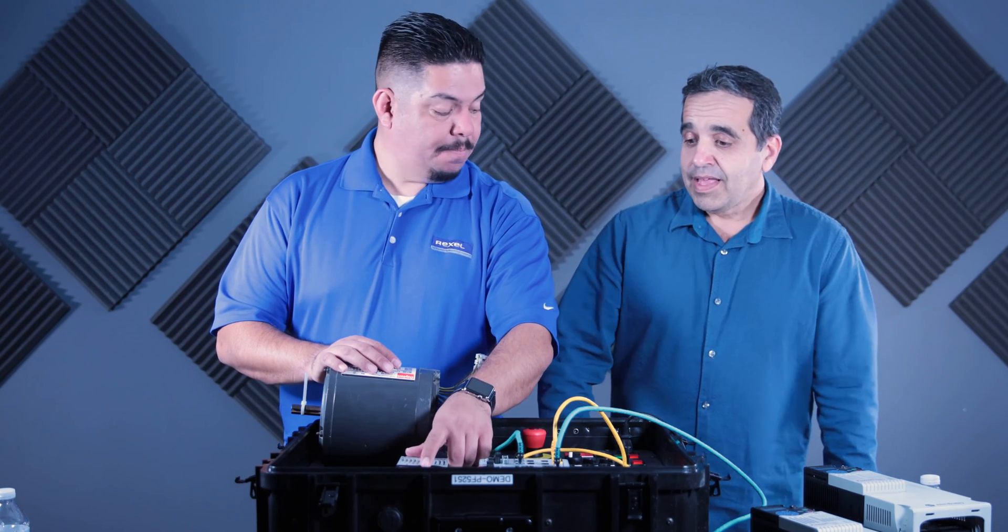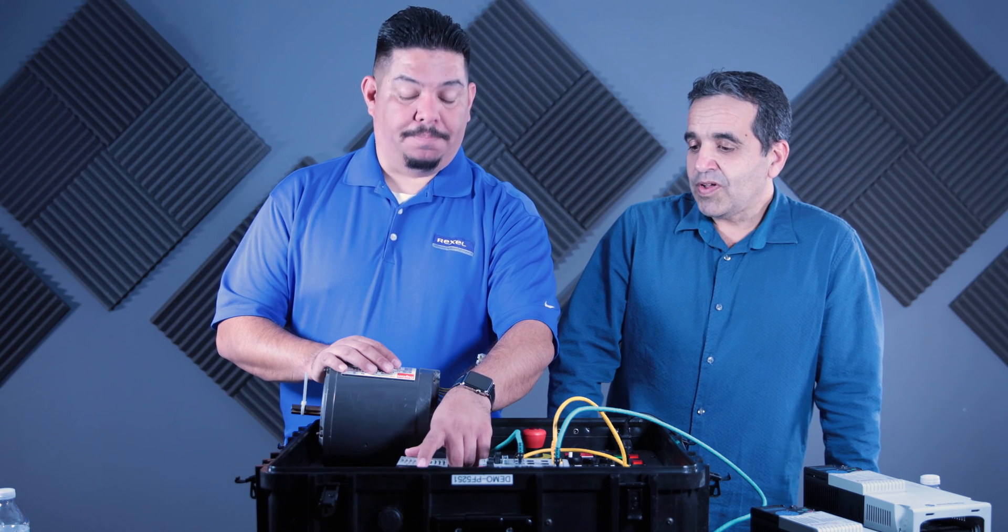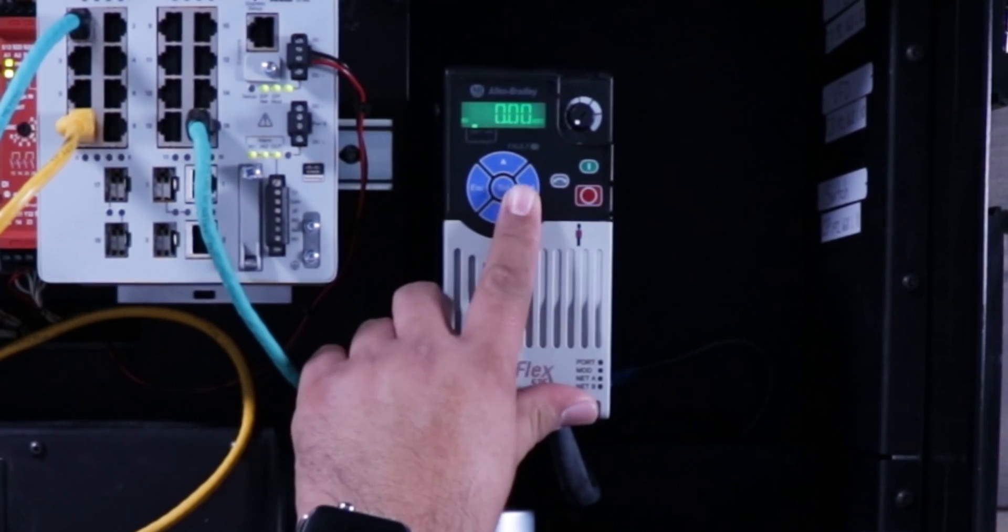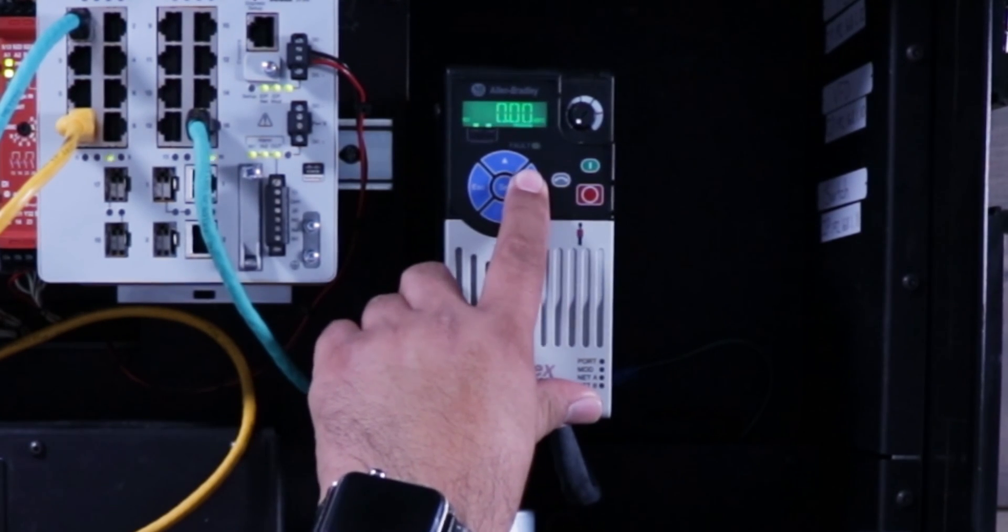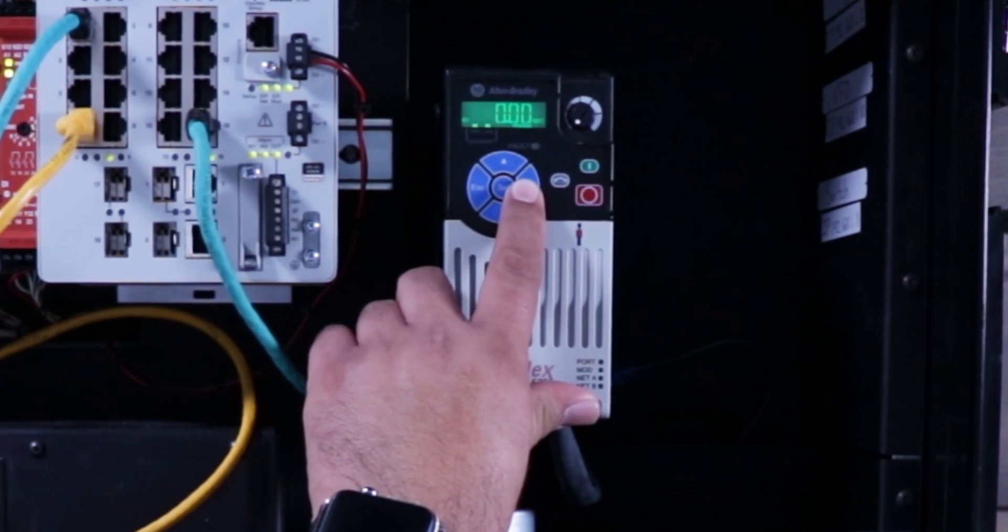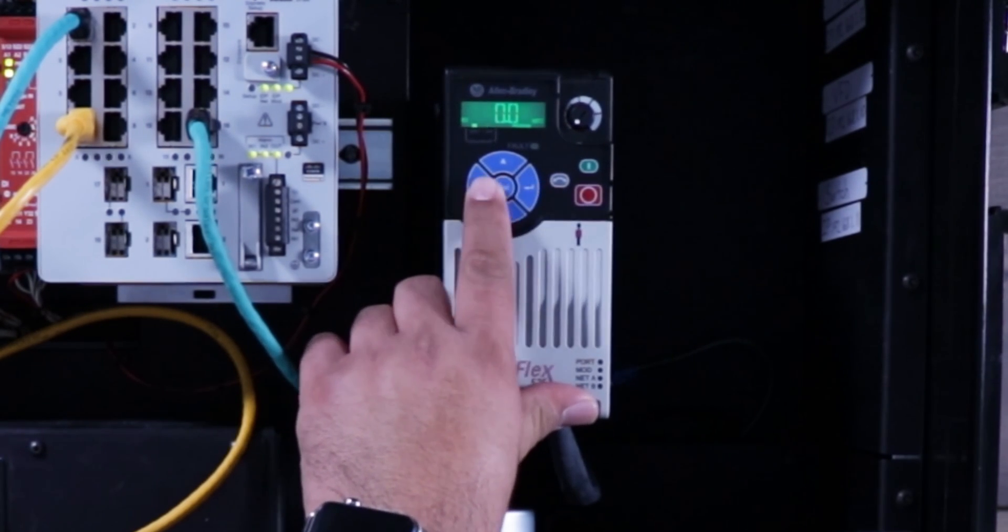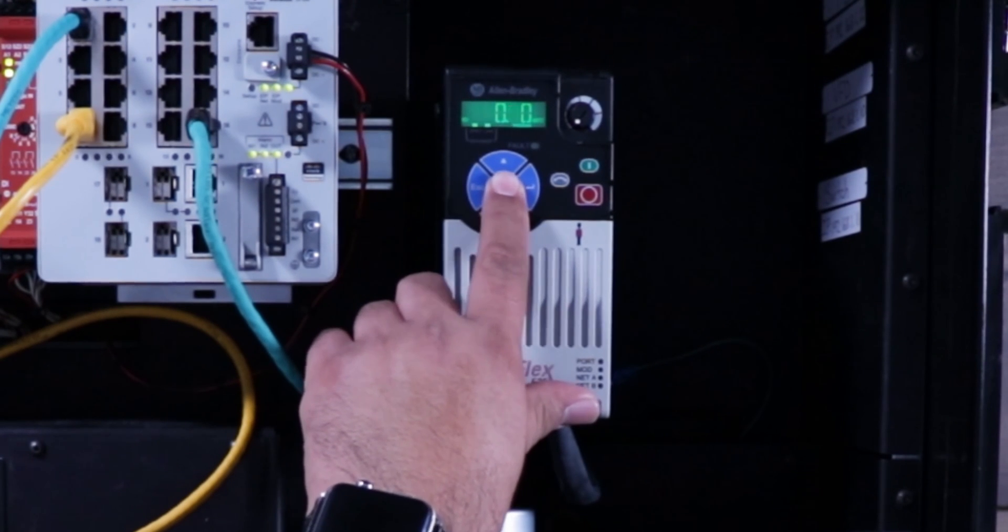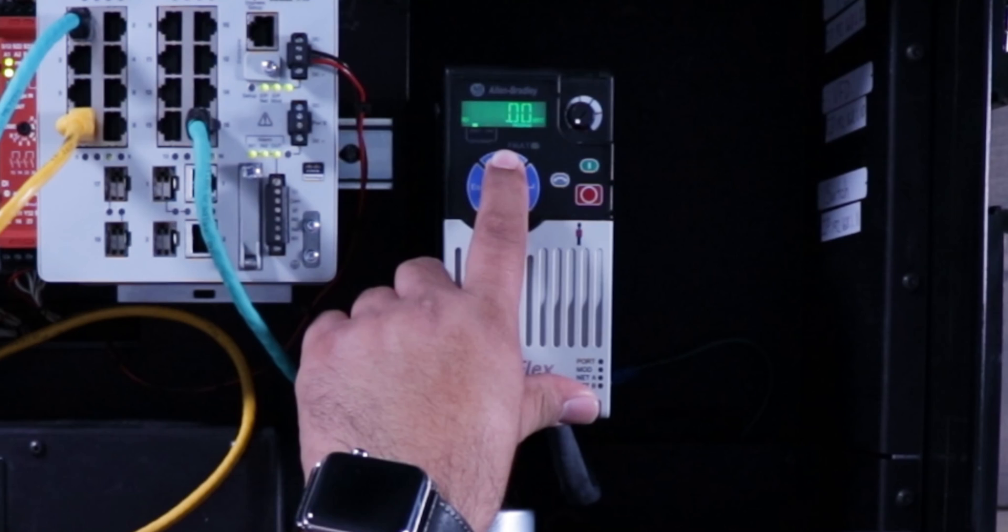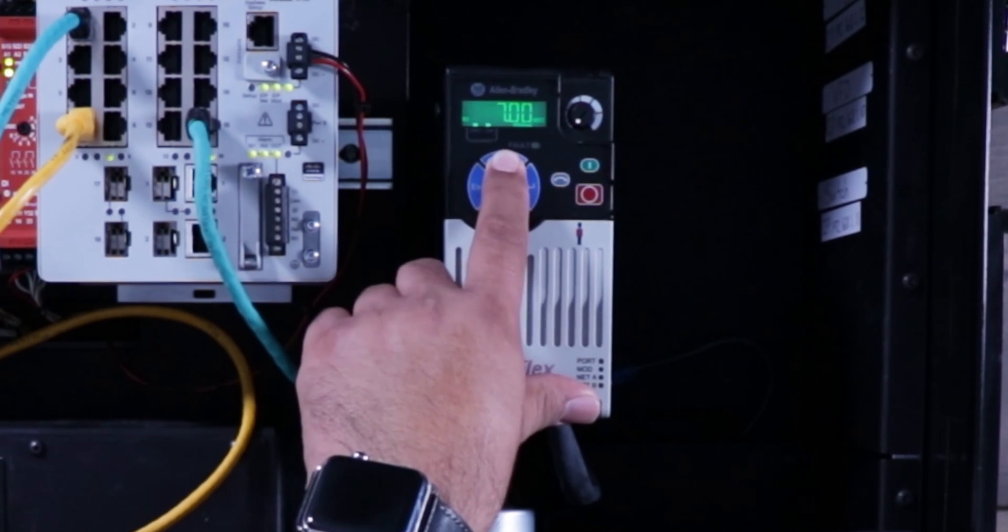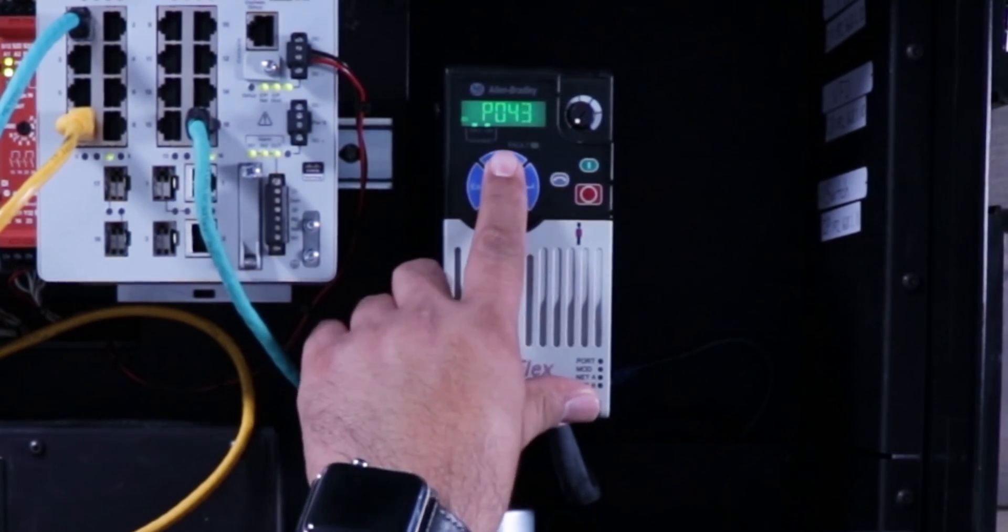So parameter 43 would be our minimum frequency. The slowest you want the motor to go before you can't go any slower. And again, let's go all the way down to zero for that. Typically, you don't want to run a VFD slower than 10. Some applications may require it. And you can do that with specific motors. But for the most part, 10 Hertz is, you're pushing it with 10 Hertz. So we've tried not to go below that. And that's pretty slow.